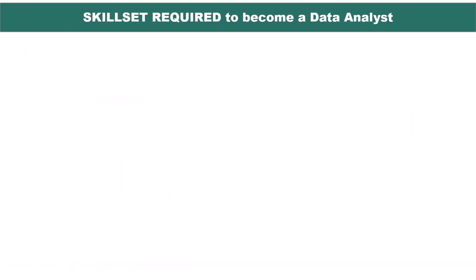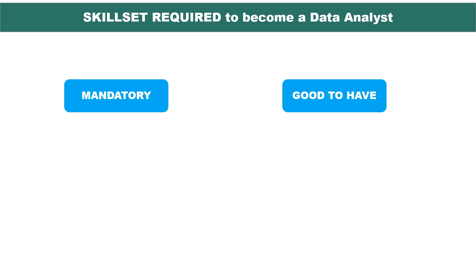What is the skill set required by a data analyst or data scientist? First I will talk about data analyst. What are the mandatory skill sets? First is basics of mathematics. If you are looking to become a data analyst, you should know mathematics — if you have worked on 10th, 11th, and 12th level basic mathematics like probability and related concepts, this is very important.